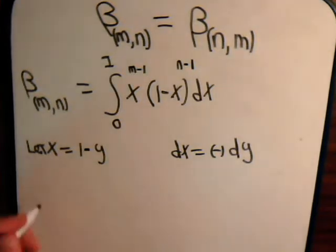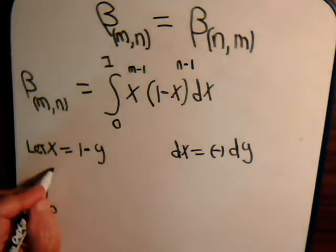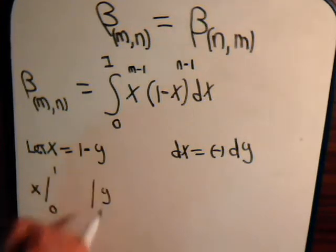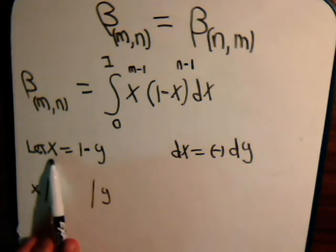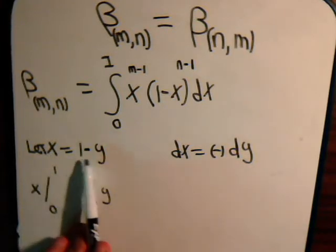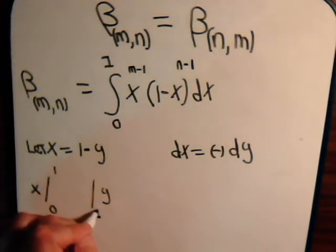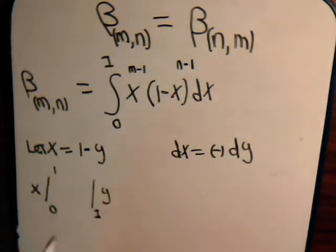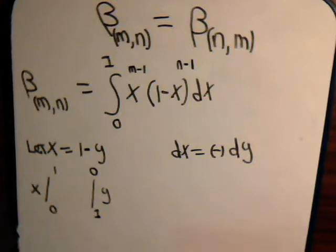And x goes from 0 to 1, so then y: if x is 0, to make this side of the equation 0, y will have to be equal to 1. And if x equals 1, then y is going to have to be 0. So the limits of y go from 1 to 0.